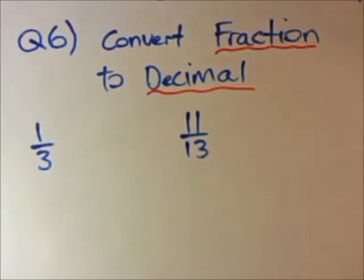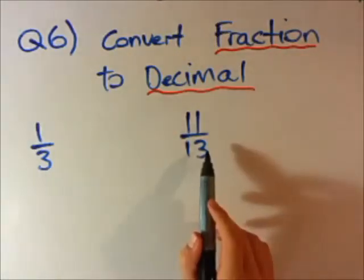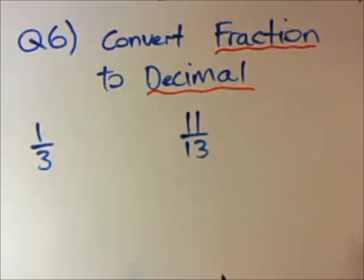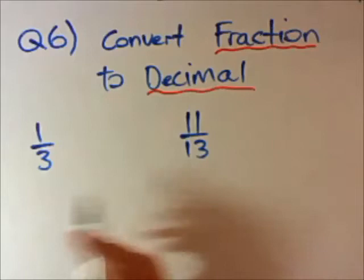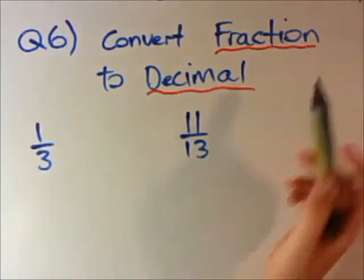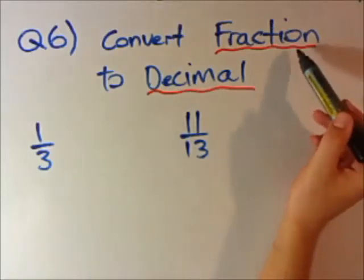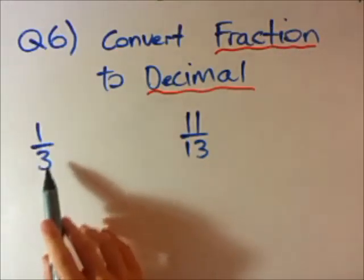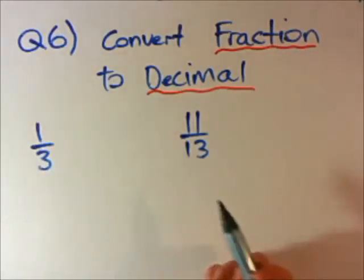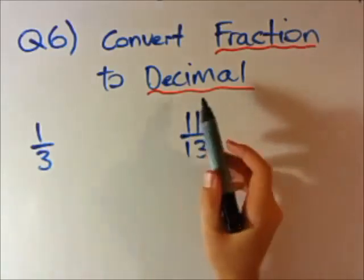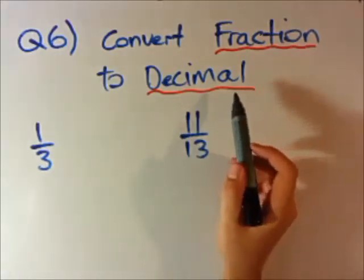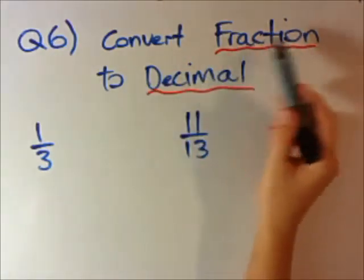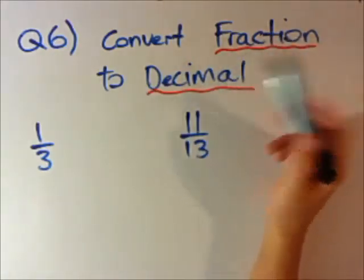Question 6. We're converting these fraction numbers to decimal numbers. This is important because sometimes we want fractions — I'll leave 1 over 3 — or sometimes we want decimal numbers. So it's good to be able to convert back and forth.